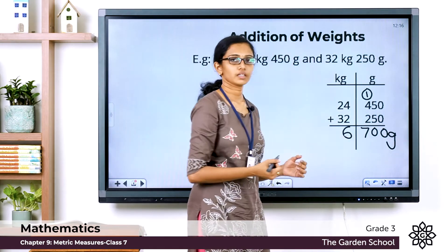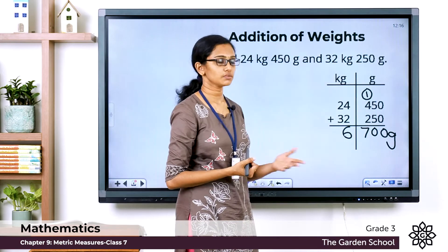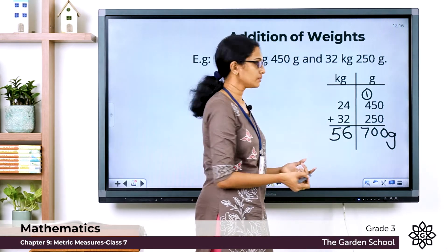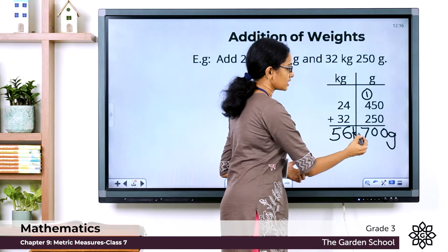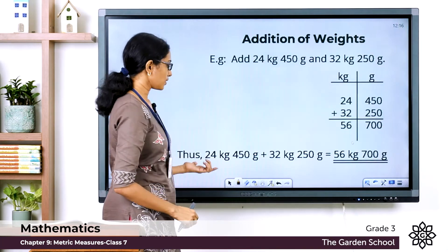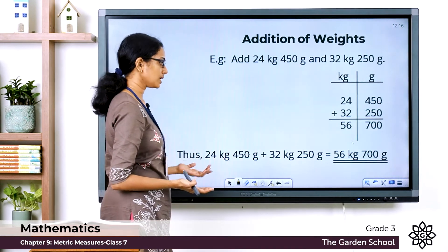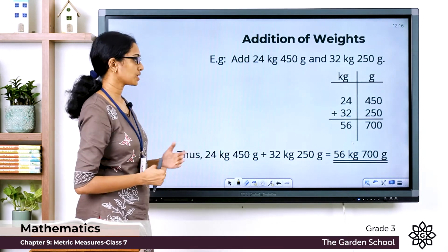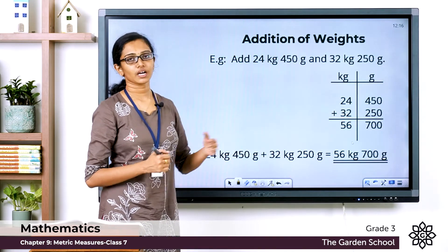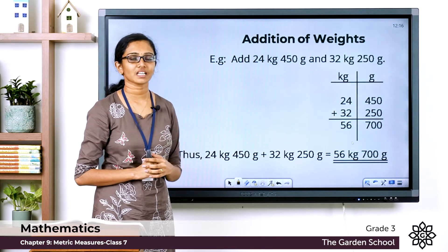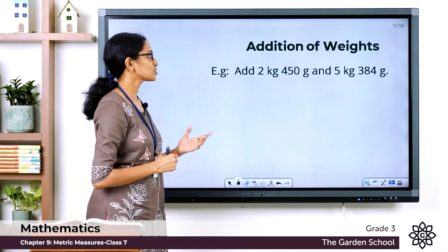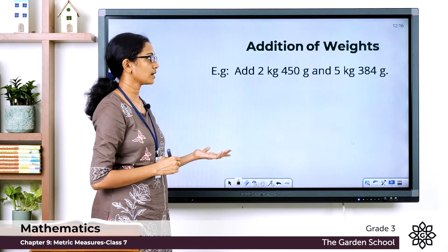Now let's proceed to the kilograms column. Here we have 4 plus 2 which equals 6, then 2 plus 3 which equals 5, so in the kilogram column we have 56 kilograms. The total weight: 24 kilogram 450 gram plus 32 kilogram 250 gram equals 56 kilogram 700 gram. Hope this is clear to you. Now we'll do one more question.